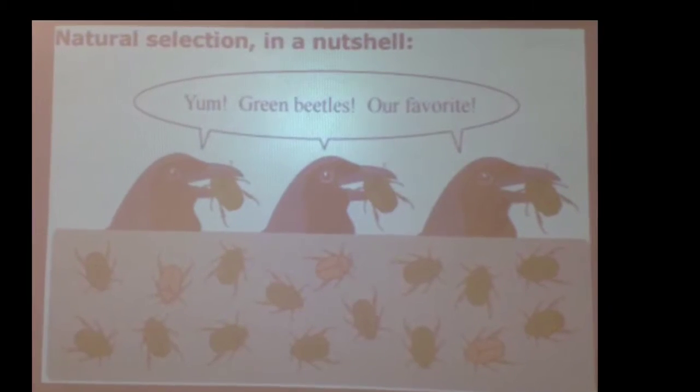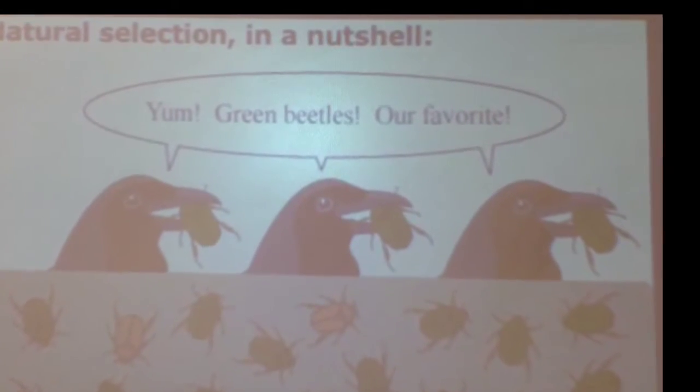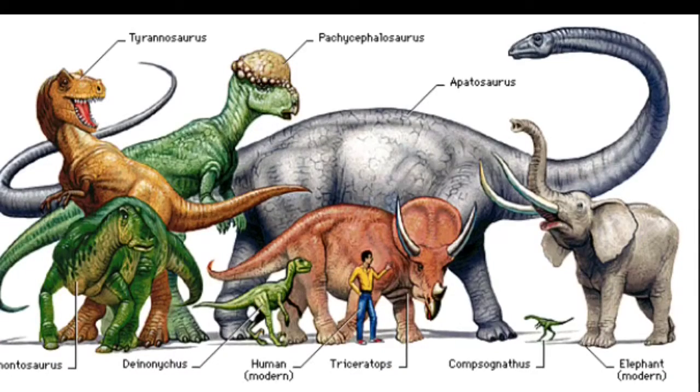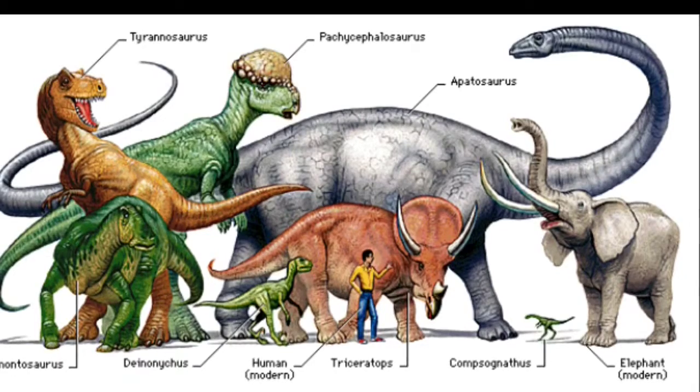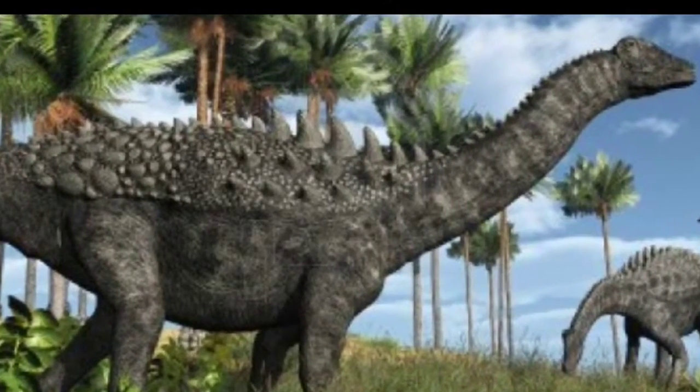Some evidence of evolution can be found in animals and how they have to adapt or they will die. Some evidence would be the vestigial structures in whales and how they used to have legs. Another key point in evolution could be found in the earth and how tropical regions become polar, and we can find those in fossils. The dying out of dinosaurs is evidence of natural selection.